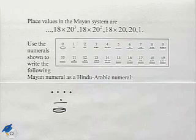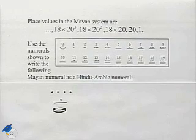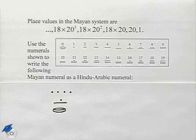This next problem deals with the Mayan system. Place values in the Mayan system are 18 times 20 cubed, 18 times 20 squared, 18 times 20, 20, and 1. We write the Mayan numerals vertically.